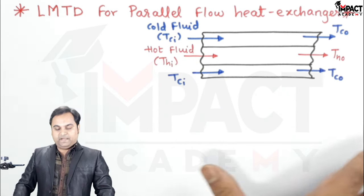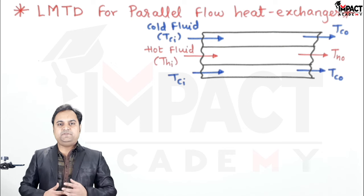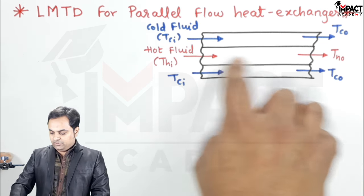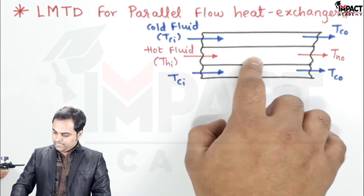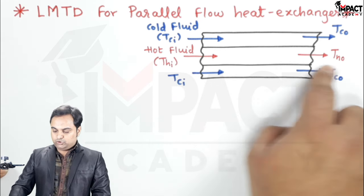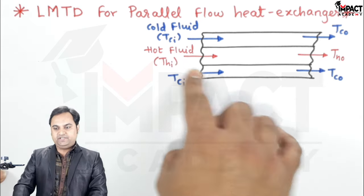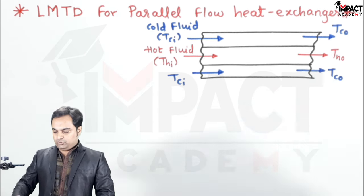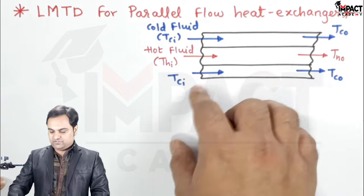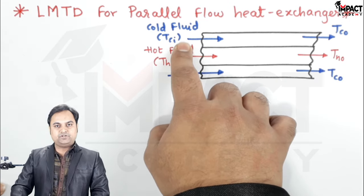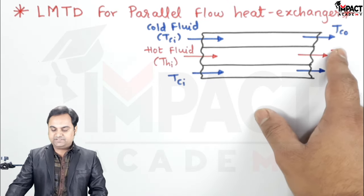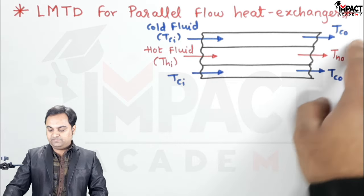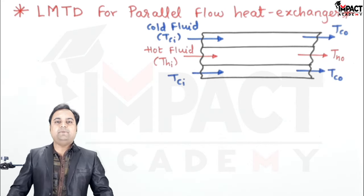Here is a parallel flow heat exchanger. This heat exchanger is basically a hollow tube in which the inside tube has a hot fluid flowing from left to right, having inlet temperature THI and exit temperature THO. Above that tube there is a cold fluid flowing with inlet temperature TCI and exit temperature TCO. Since both fluids are flowing in the same direction, it is called a parallel flow heat exchanger.